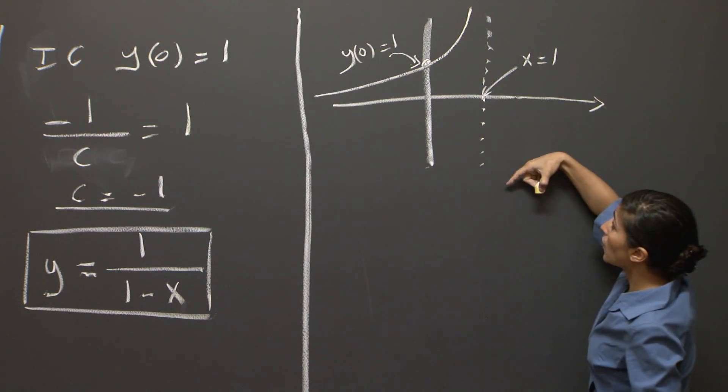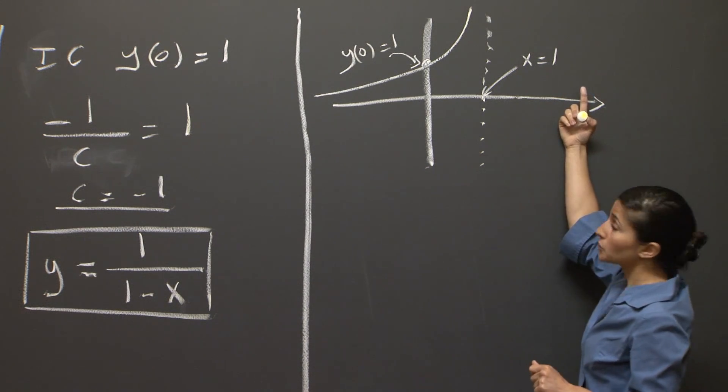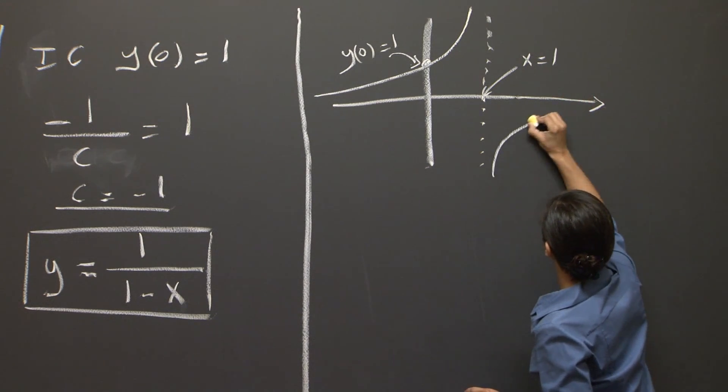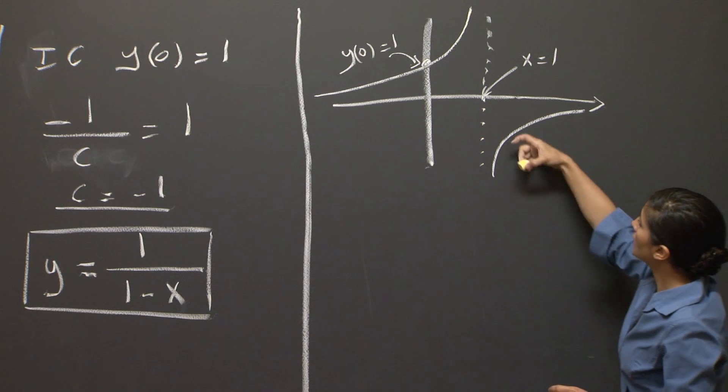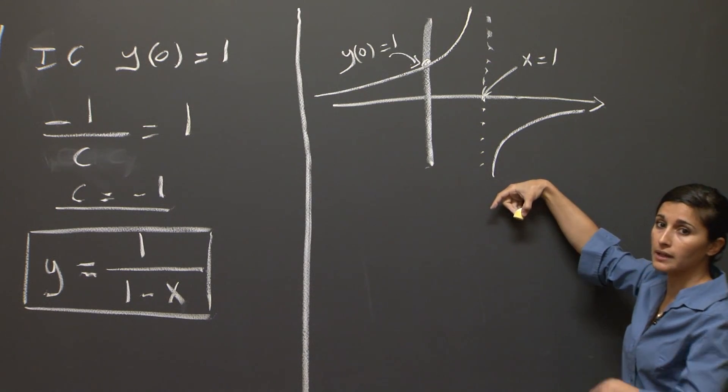But then on the right side of the value x equals 1, we also have another part of the solution that goes to 0 as x goes to infinity, and that diverges to minus infinity when x approaches 1.